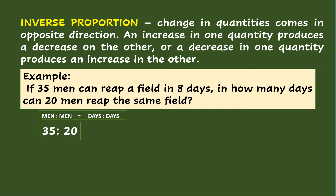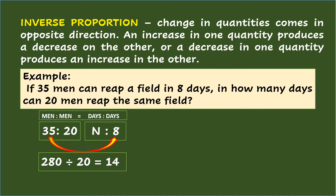With this, the first ratio is 35 is to 20, which are both number of men. The second ratio is n is to 8, which are both number of days. Take a look at the placement: 35 men who rip the field in 8 days occupy the first and fourth terms, while 20 men and the missing days occupy the second and third terms. Multiplying the pair: 35 times 8 equals 280. Dividing 280 by 20 equals 14.